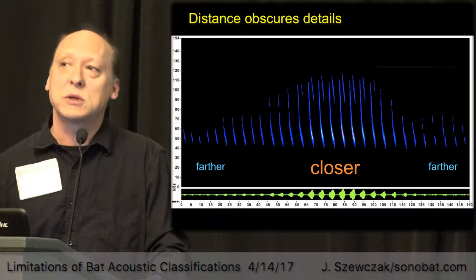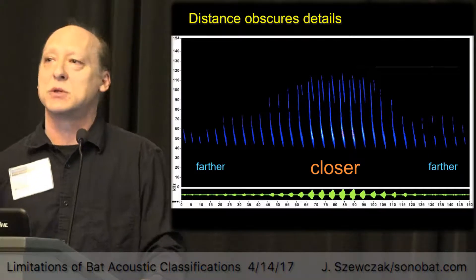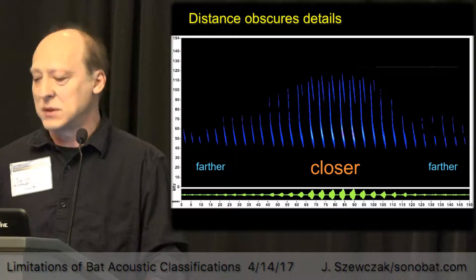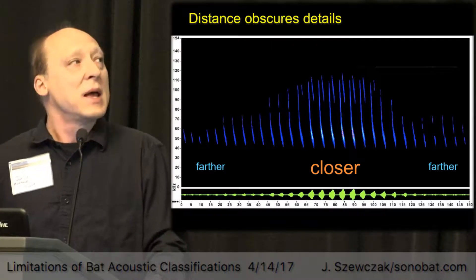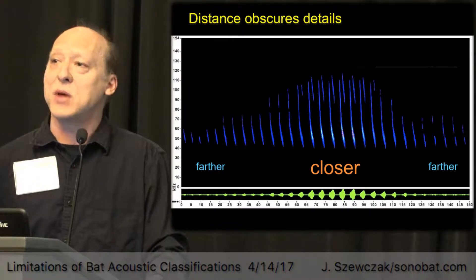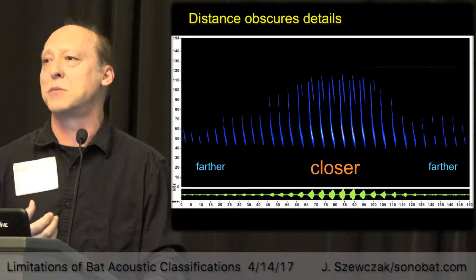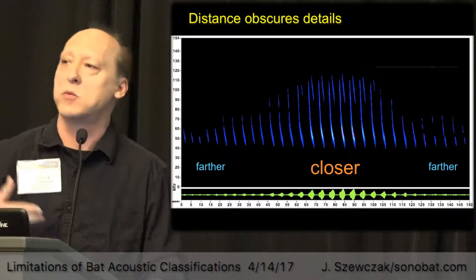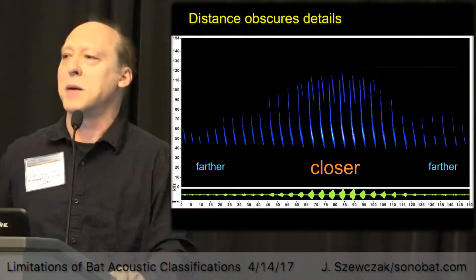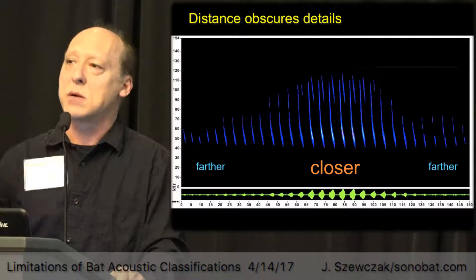When bats are really close to us we get good strong crisp signals and the full extent of the signal the bat is producing. Bats farther away give us less - what are called fragments, not the entirety of the signal. The first lesson of ultrasound is that ultrasonic waves are very short and attenuate much faster, so they don't travel as far in the atmosphere. Sound attenuation is much greater with ultrasound than with normal sound.